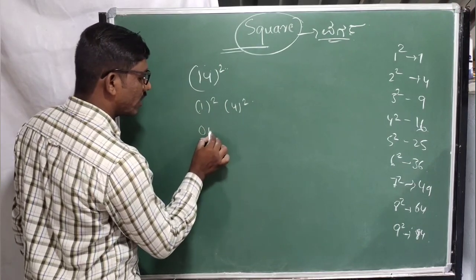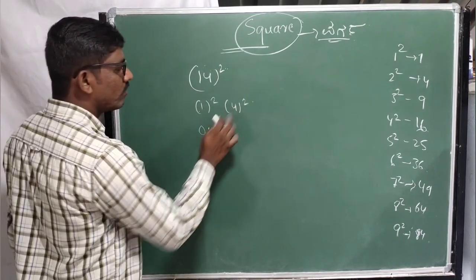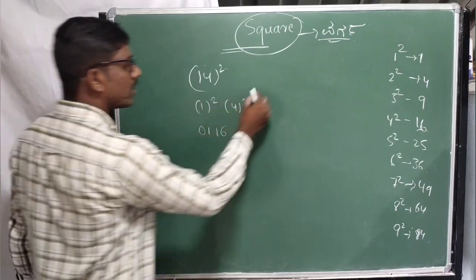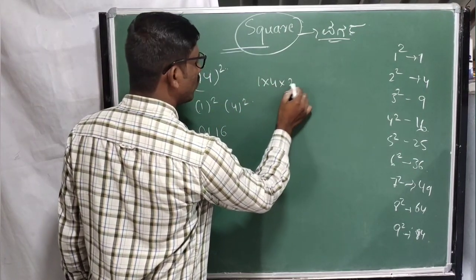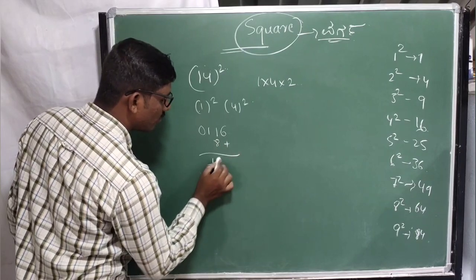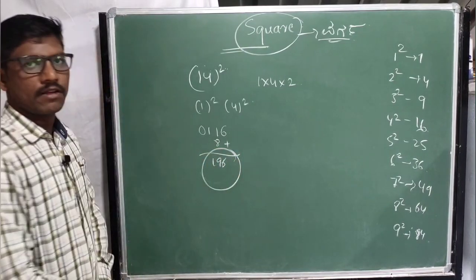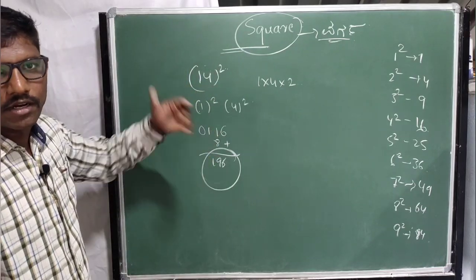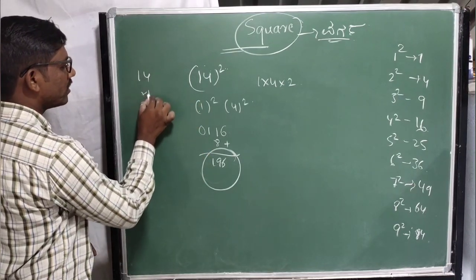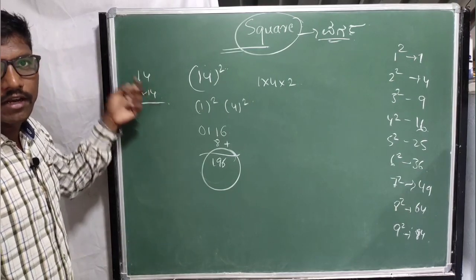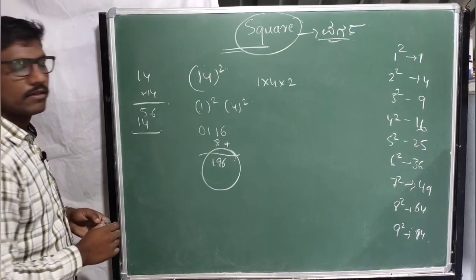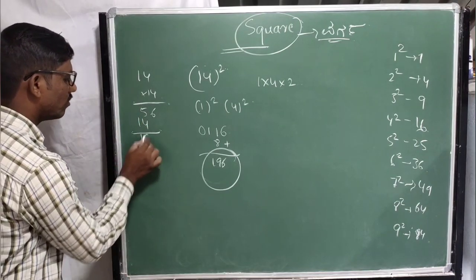1 squared is equal to 1. 0 is equal to 1. Next, 4 squared is equal to 4. So this is equal to 4. Next, we have 1 into 4 into 2. Now 4 into plus minus is equal to 6. So this is equal to 4. Here, the result is 1, 9, 6.